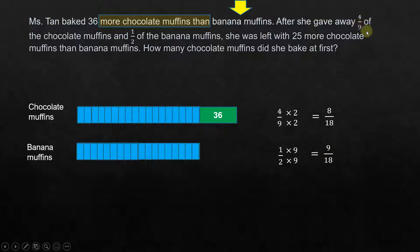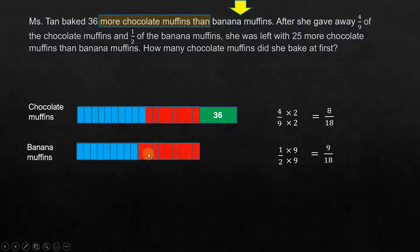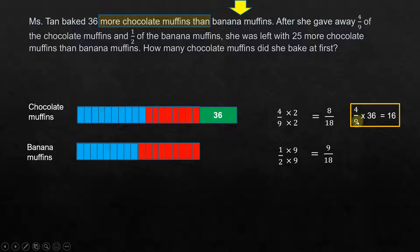So she gave away 8 out of 18 units of the chocolate muffins, and 9 out of 18 units of the banana muffins. Now we've covered the unknown part, but the known part is 36. We calculate 4/9 of 36 separately: 36 divided by 9 is 4, times 4 gives 16. So 16 is given away out of 36, and the remaining known part is 20.